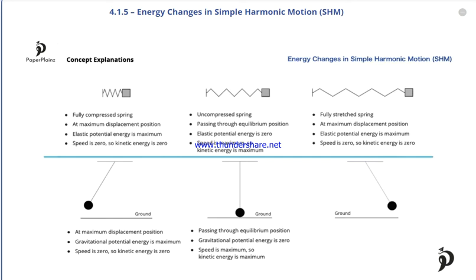After passing through the equilibrium position, the pendulum starts to gain height and lose speed. At some point it reaches its other maximum displacement position, all the way to the right. Here again gravitational potential energy is at its maximum, and since the object stops for a moment, speed is zero and kinetic energy is zero.